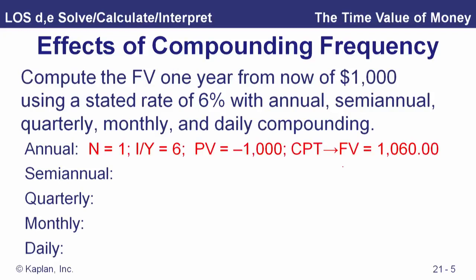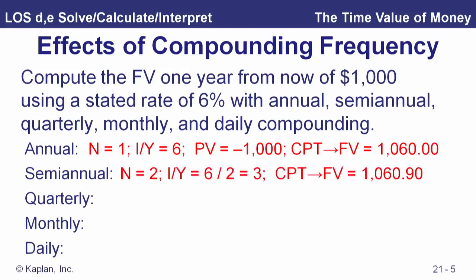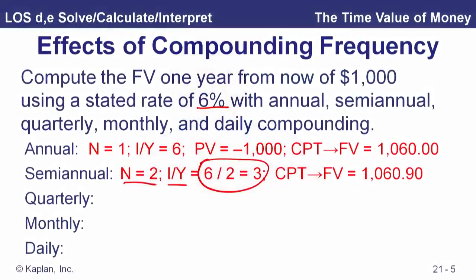Our $1,000 at six percent annual compounding grows to $1,060. With semi-annual compounding, if our stated rate is six percent we divide by two, so our interest rate is three percent with two periods. Note that payment is zero — if you cleared the work that sets payment to zero, but best practice is to enter it explicitly. With more frequent compounding it grows to a bigger number, just as the effective annual rate is greater with more frequent compounding periods.